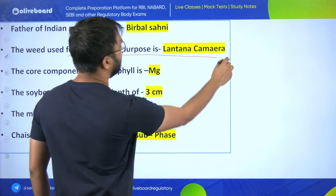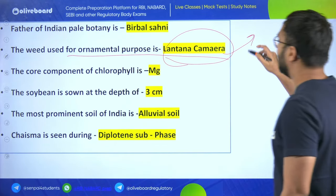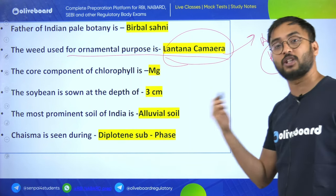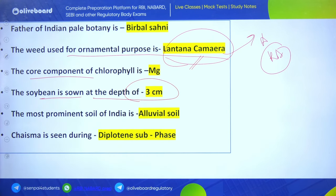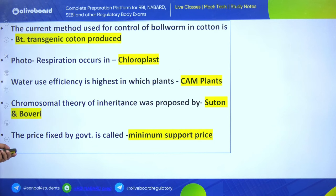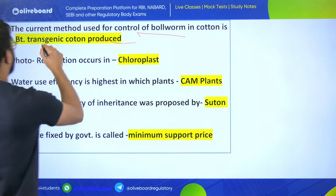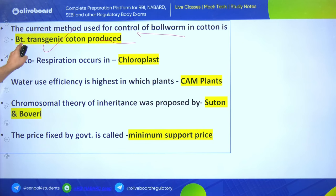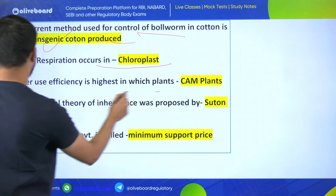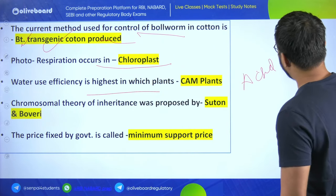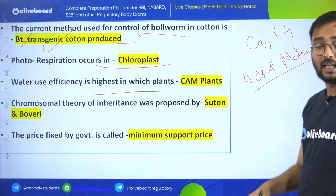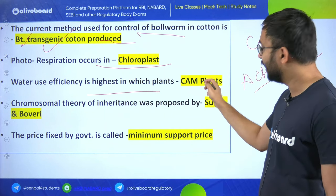Relative humidity is measured by psychrometer. Father of Indian paleobotany is Birbal Sahni. Lantana camara is a weed used for ornamental purposes - it appears in weed-related options in AFO, RIO, and all other exams because it is very famous. The core component of chlorophyll is magnesium. Wheat is sown at a depth of 3 centimeters. The most common soil in India is alluvial. Chiasma is seen during diploten sub-phase.